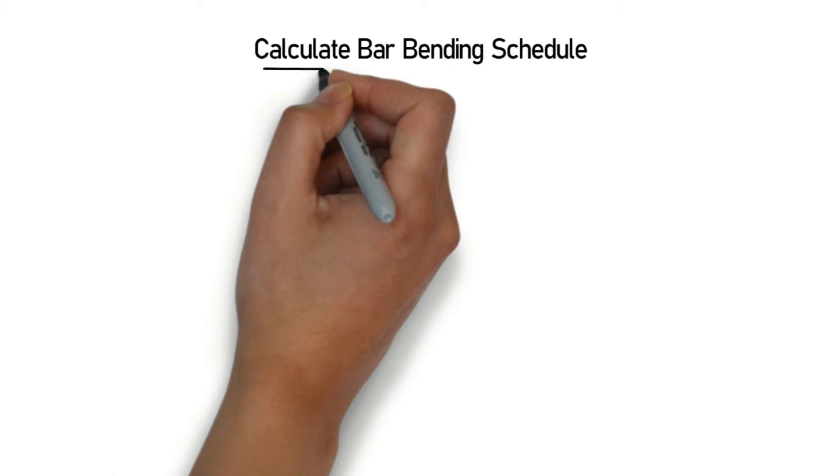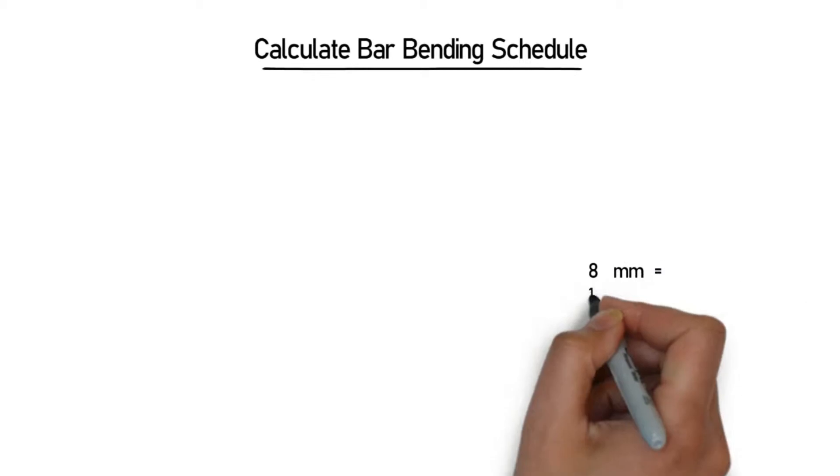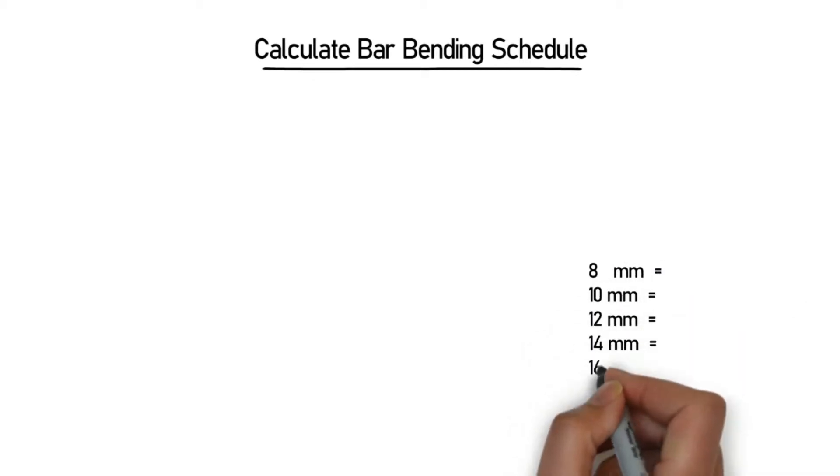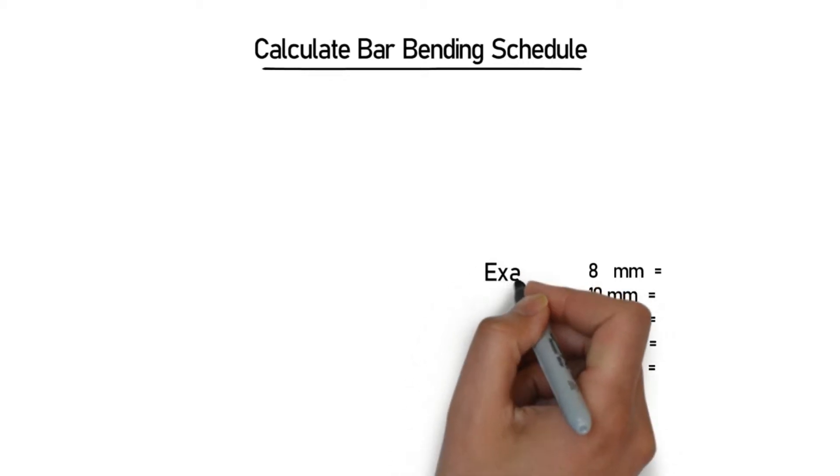Let's begin. As we all know, steel comes in different diameters like 8mm, 10mm, 12mm, 14mm, and 16mm.